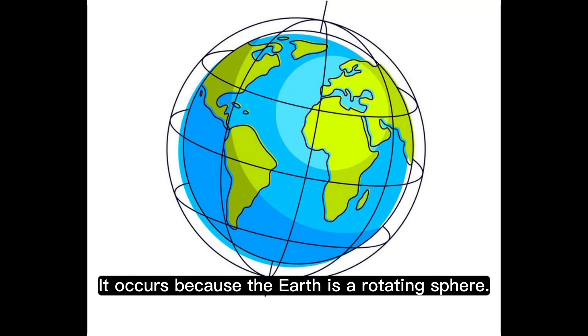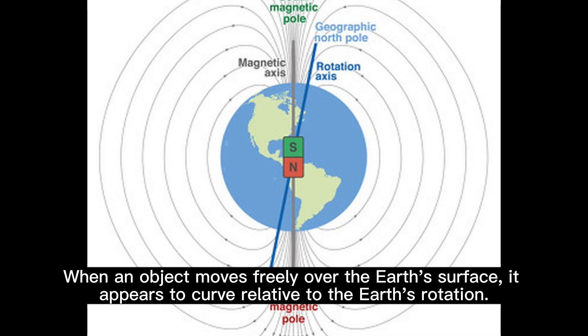It occurs because the Earth is a rotating sphere. When an object moves freely over the Earth's surface, it appears to curve relative to the Earth's rotation.